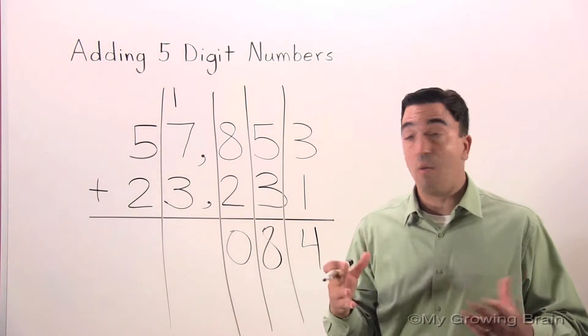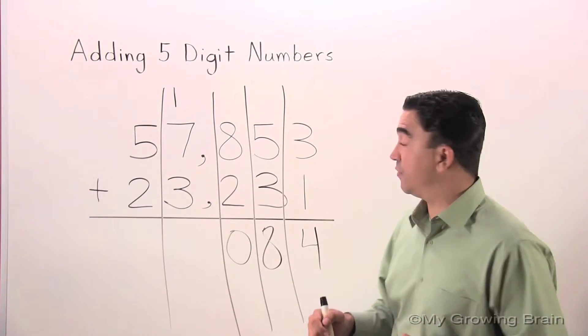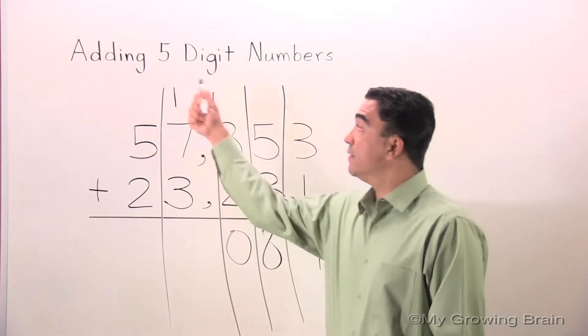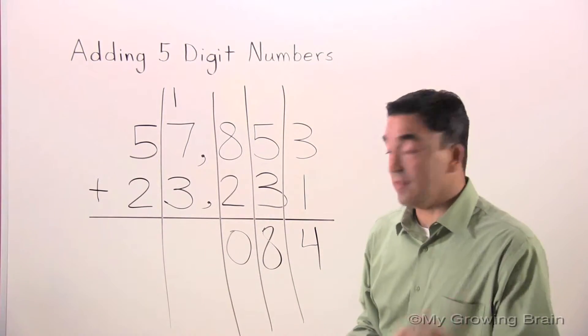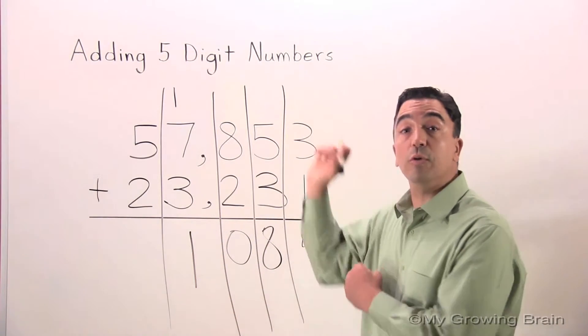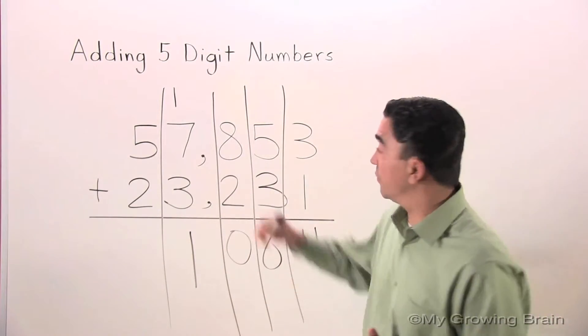Now I will add all three digits in the thousands place. Three plus seven is ten. Ten plus one is eleven. Now I will regroup or carry over the one into the ten thousands place.